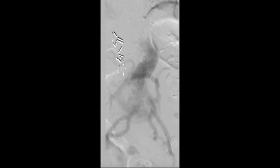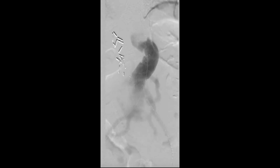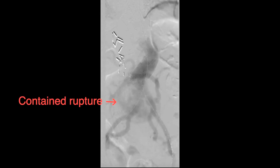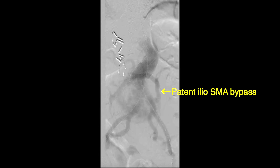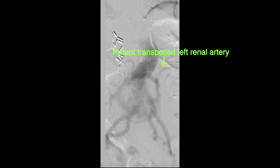The decision was made to perform an endovascular repair of this contained rupture. After gaining access to the superficial femoral artery, a pigtail catheter was introduced and an abdominal aortogram with runoff was performed. Demonstrated here is active extravasation resulting in a contained rupture, along with a patent left ilio-SMA bypass and a patent transposed left renal artery onto the bypass limb to the SMA.